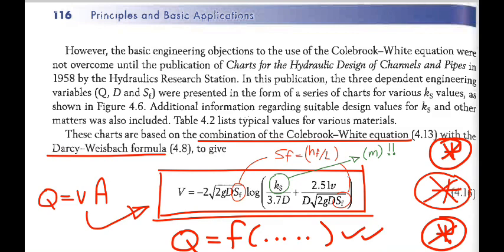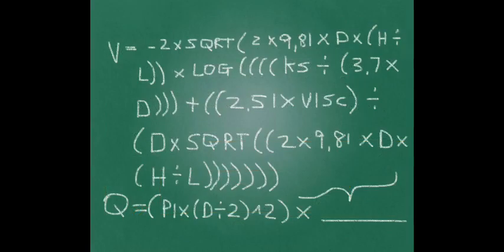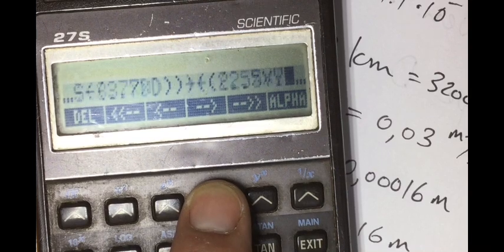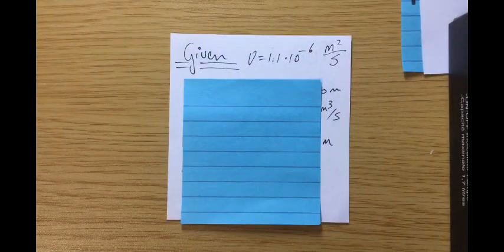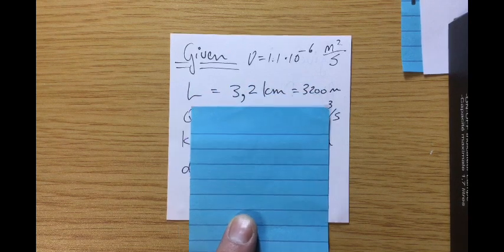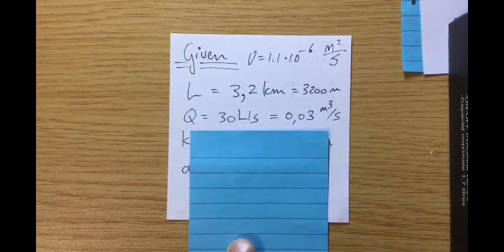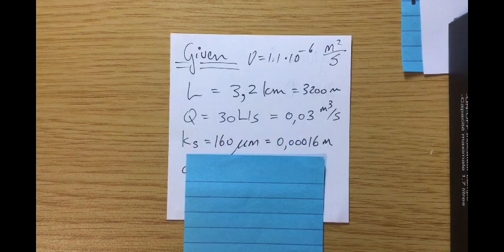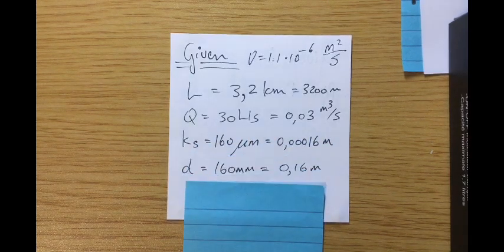Finally we get to the point where we input the Kohlbroek-White-Darcy-Weisbach equation in a calculator. Consider a pipe with the following known information: kinematic viscosity, pipe length, the flow rate q, absolute roughness ks and finally pipe diameter 160 millimeters.